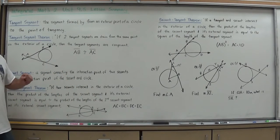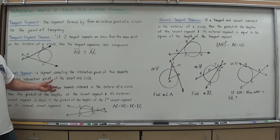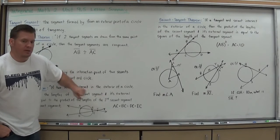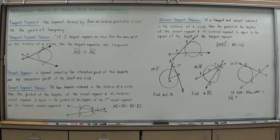When we talk about some of the theorems, we also talk about the exterior secant segment. So the entire thing is a secant segment. Just CB can be considered an exterior secant segment. Let's use that now to get into a theorem.